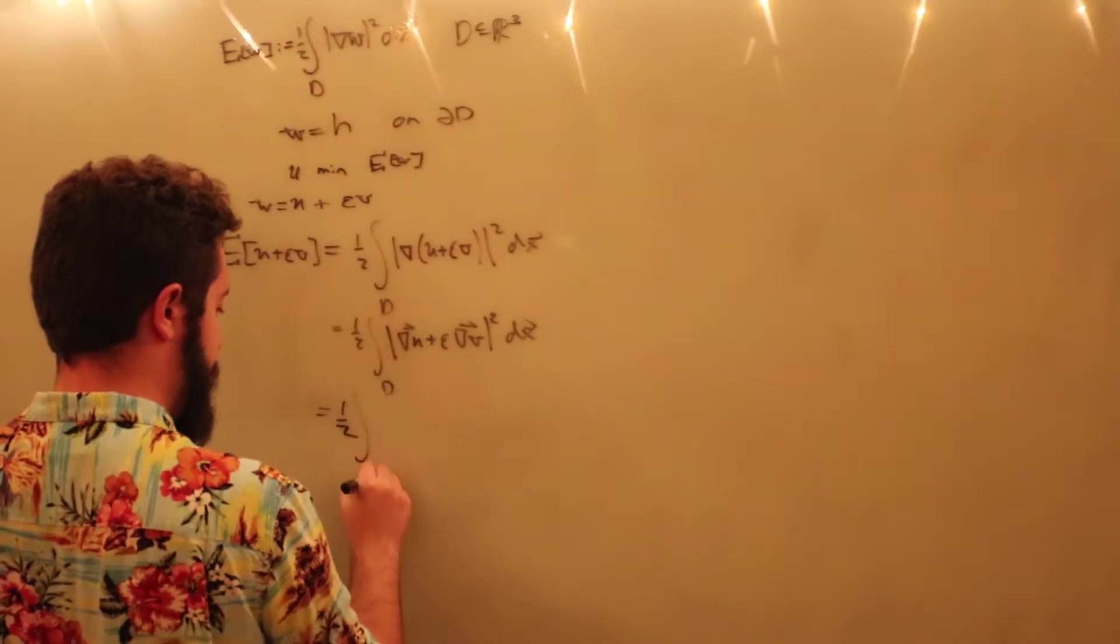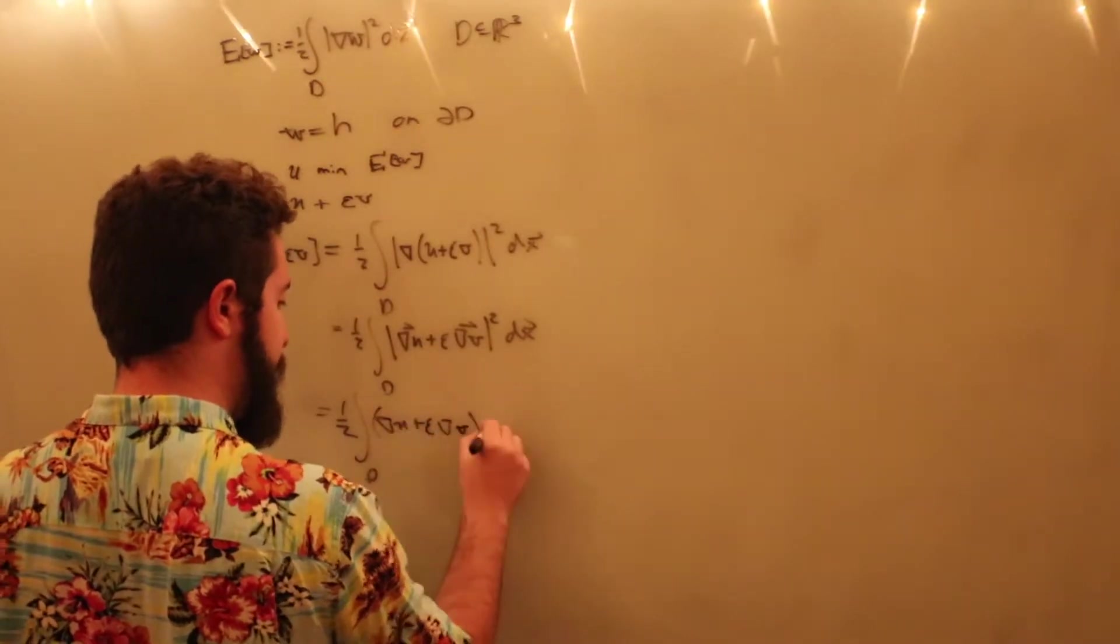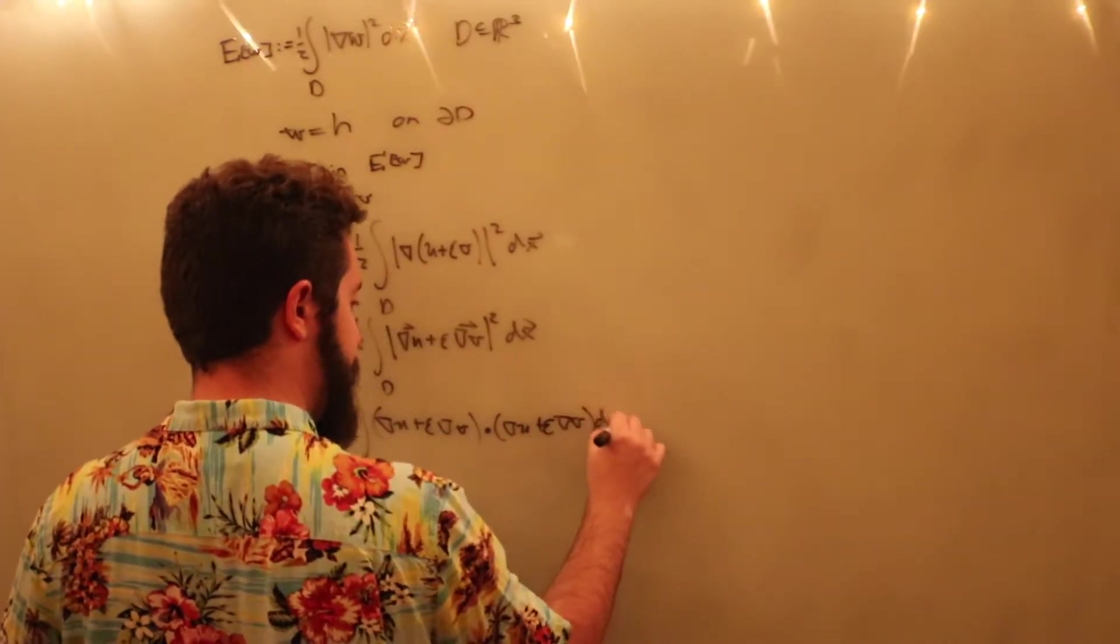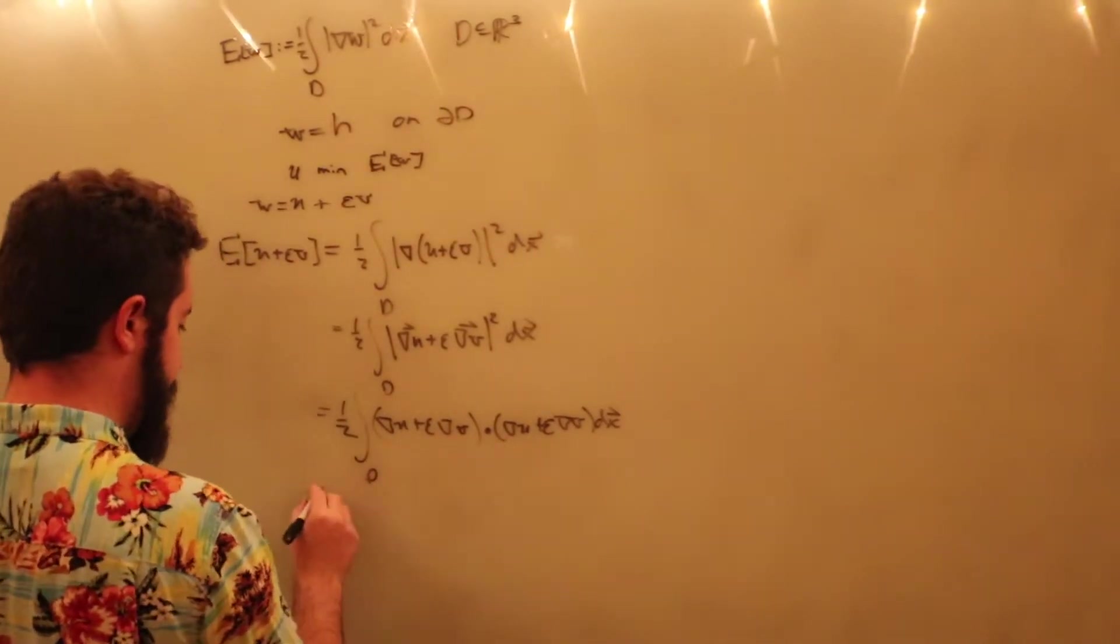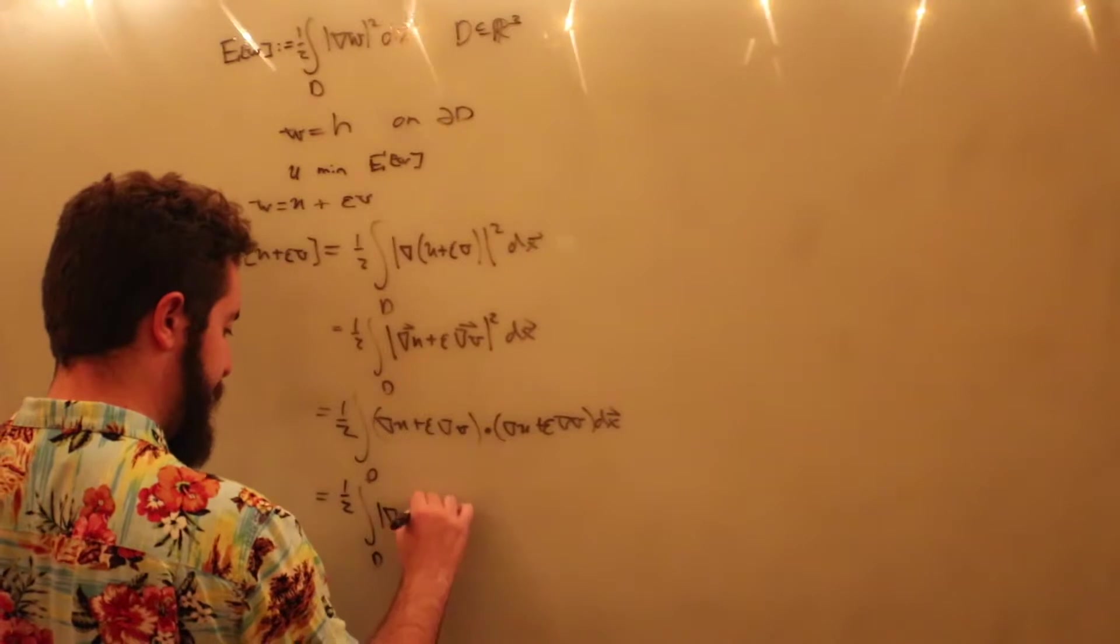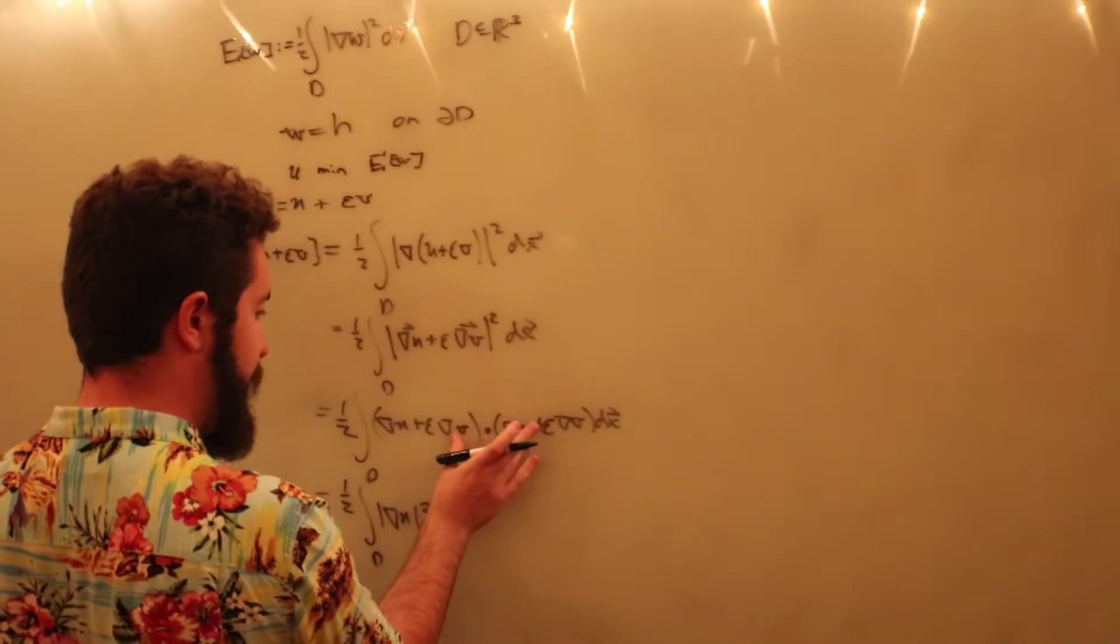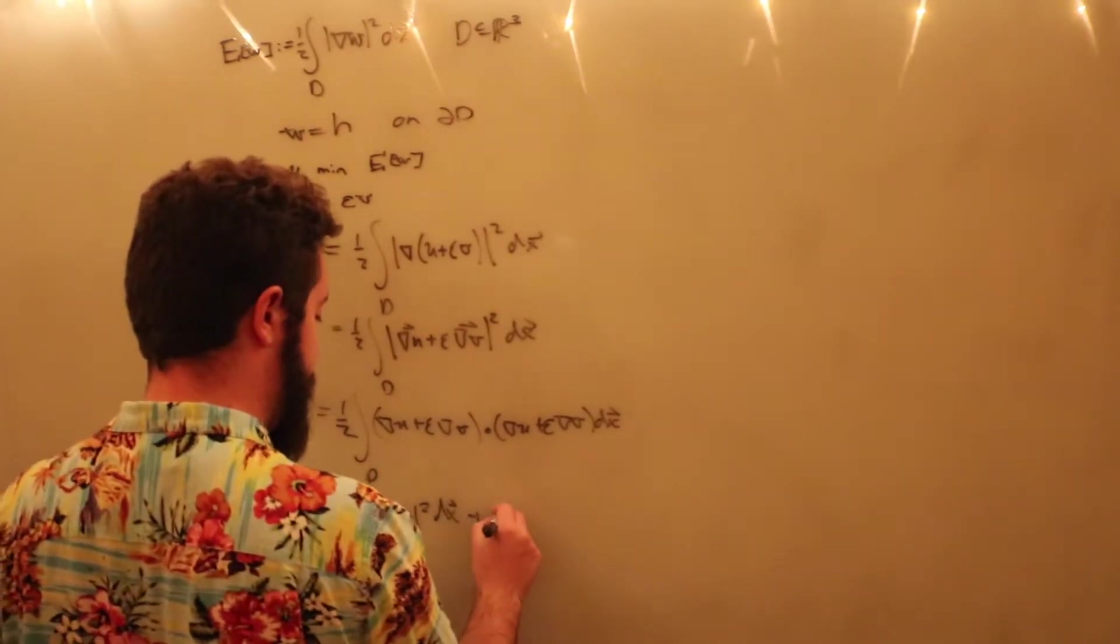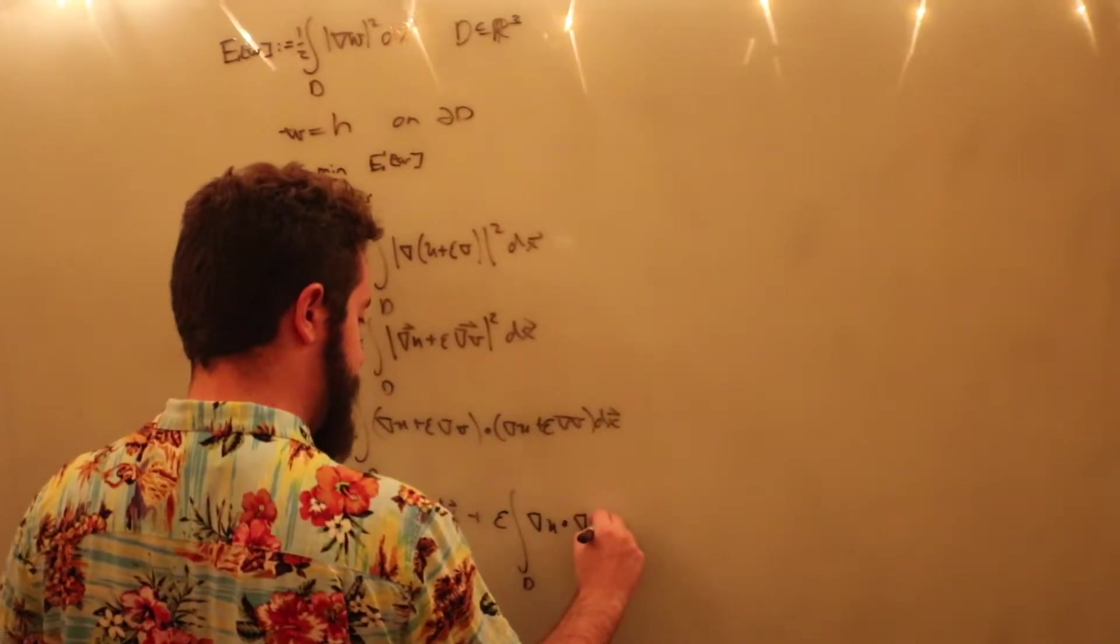Is equal to one-half integral over d of grad u plus epsilon grad v dotted with grad u plus epsilon grad v dx. And then we can just do this, again, it's linear, so we can do this term by term. Is equal to one-half integral over d of the gradient of u dotted with itself plus two times grad u dot grad v with the epsilon, of course. But the two is going to cancel out with the one-half.